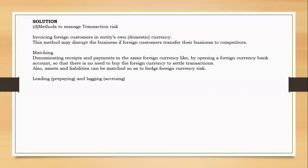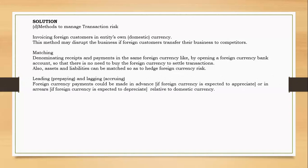The third method is leading and lagging. Leading means paying early when a foreign currency is strengthening — because as time passes, you would need more of your local currency to settle, so you pay before the rate worsens. Lagging means delaying payment when the foreign currency is weakening, so that as it depreciates relative to your currency, you settle using a smaller amount of local currency. That covers all three internal methods. We are done with this question — if there's anything you need to ask, please do.